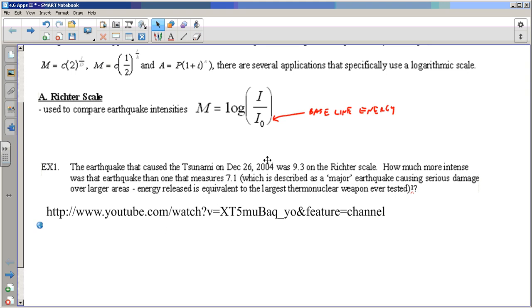There was one quite a few years ago now, almost coming up on a 10-year anniversary when I'm making this video in 2014. There was a big earthquake and it measured 9.3. How much more intense was that earthquake than one that measures 7.1 on the Richter scale? Notice the one that measures 7.1 is described as a major earthquake causing serious damage over large areas. The energy released by an earthquake this big is equivalent to the largest thermonuclear weapon ever tested.